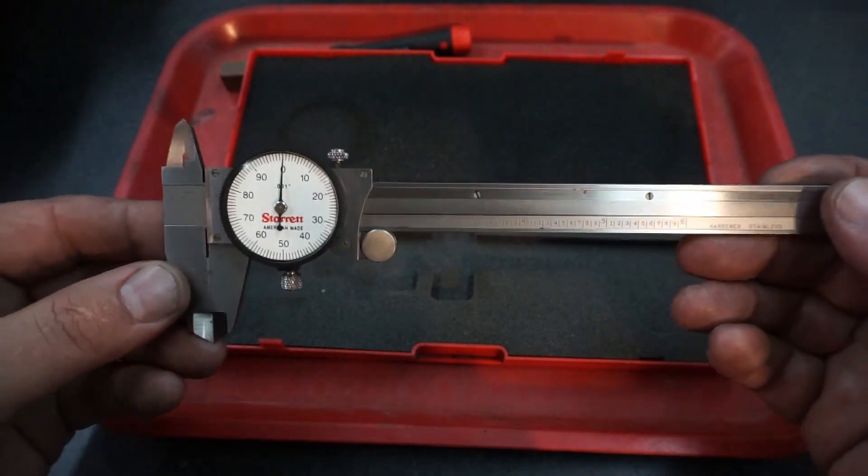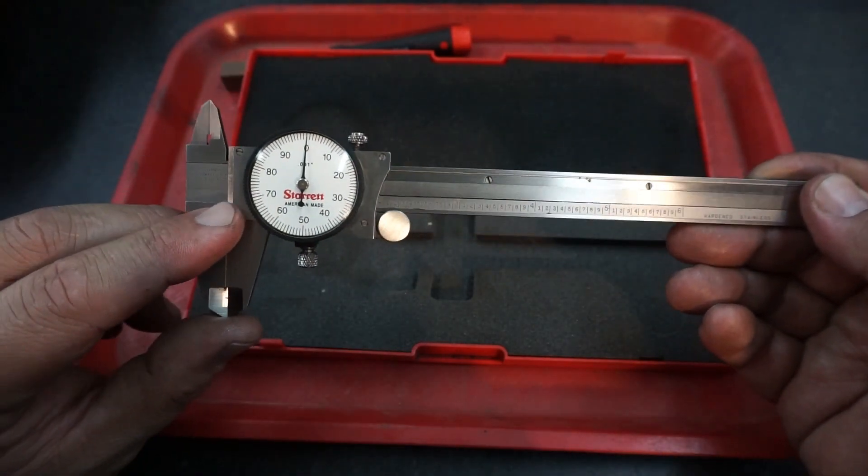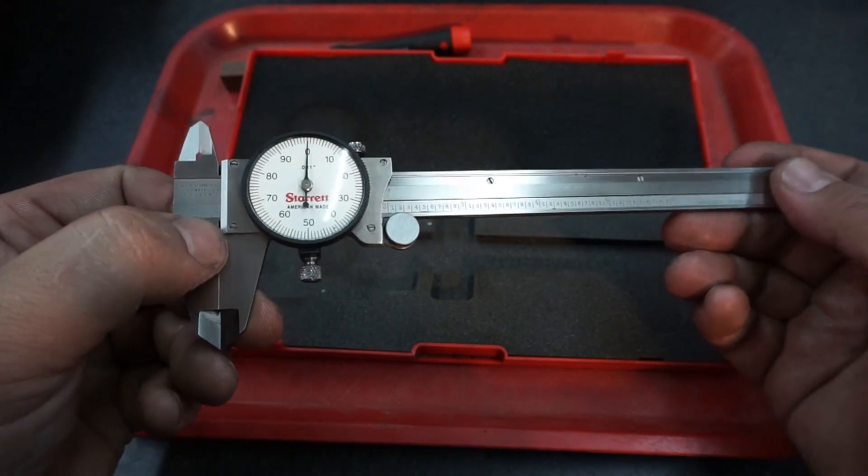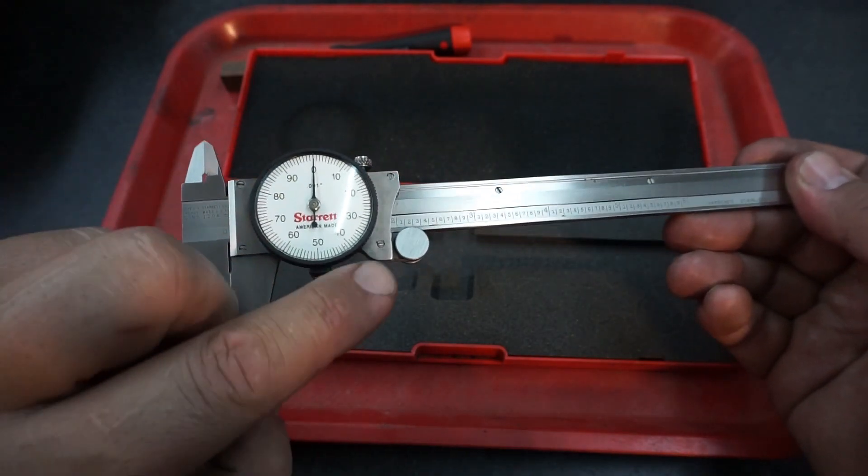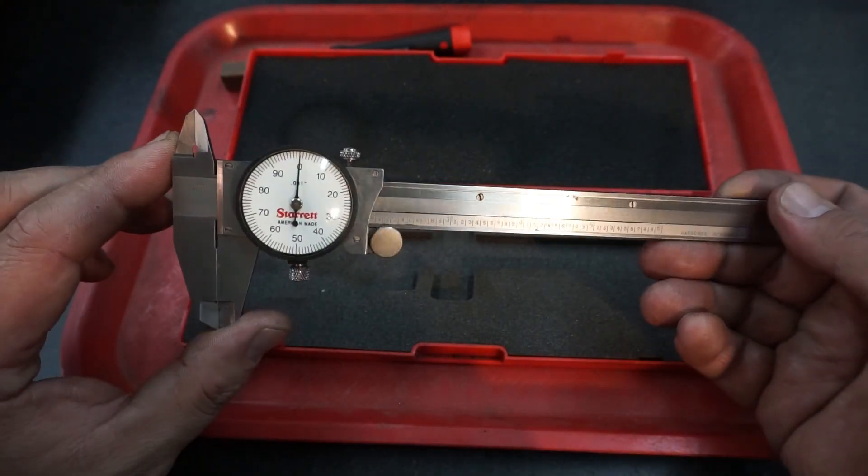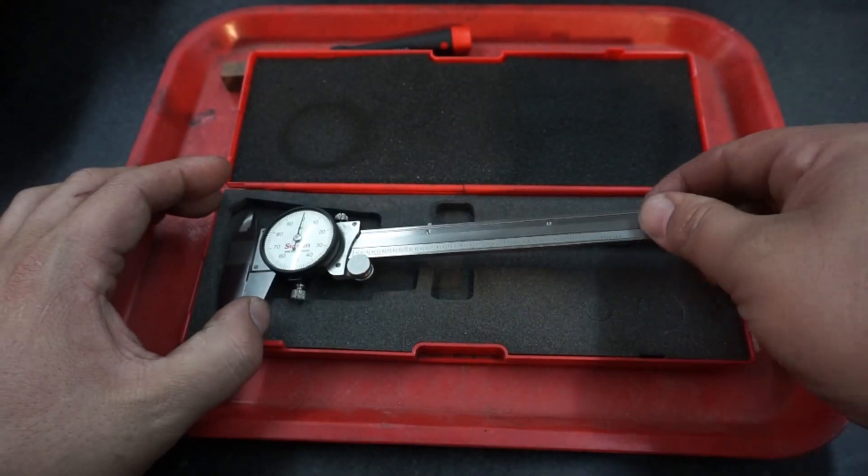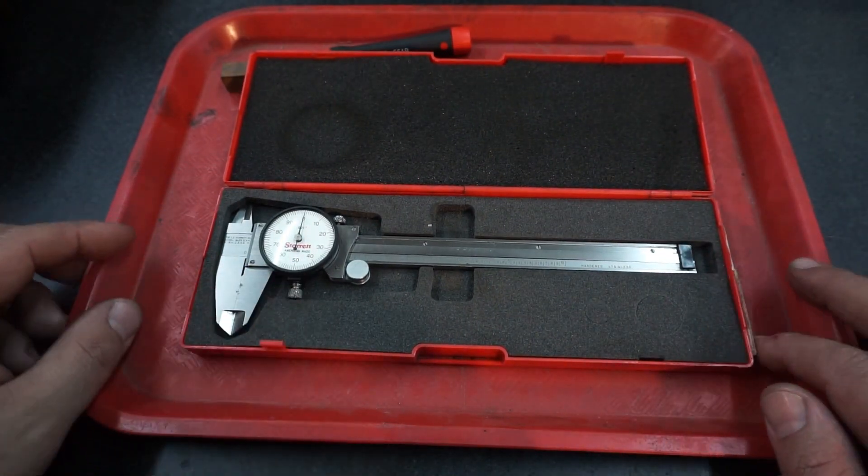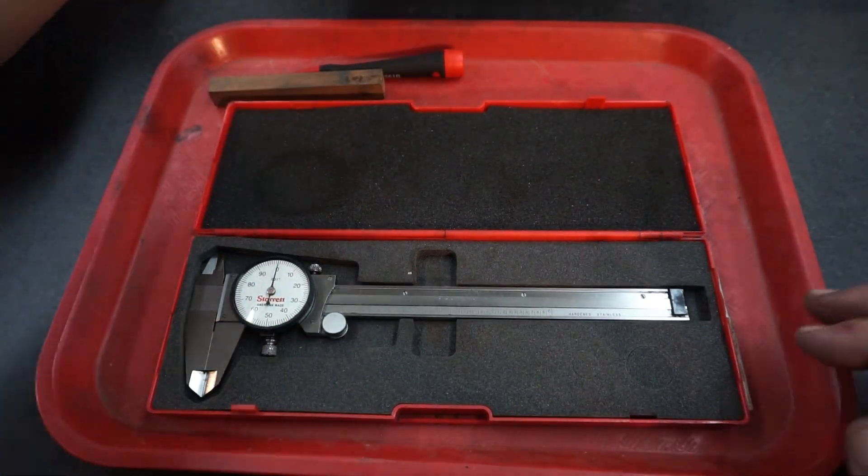What is unique about the Starrett 120s is you got four screws here that you can remove and take this piece off, and that allows you to easily re-clock this. Now this is the only caliper that I'm aware of that you can do that to.